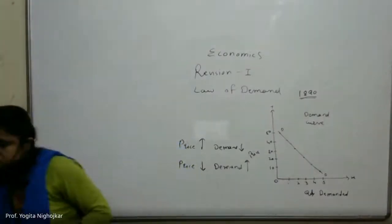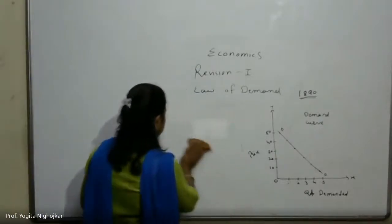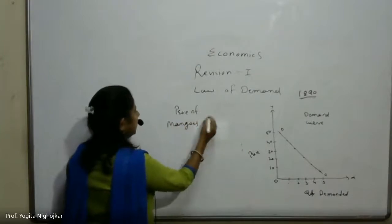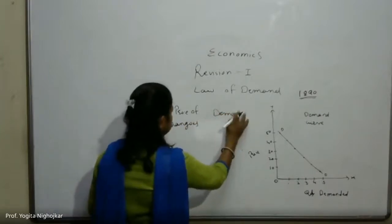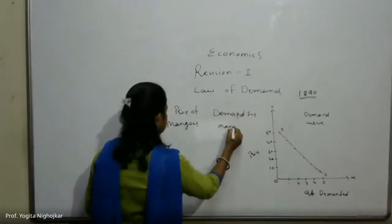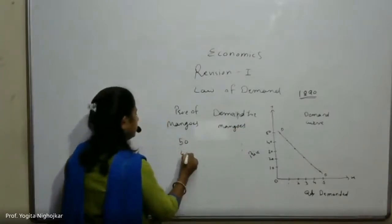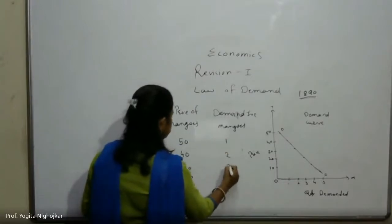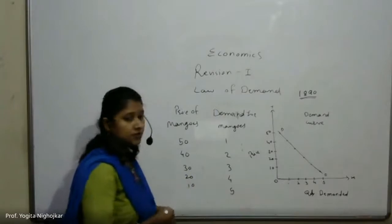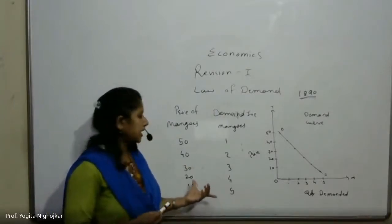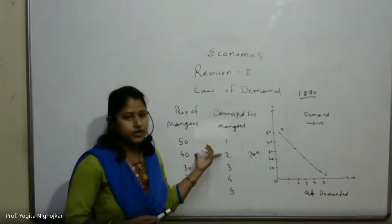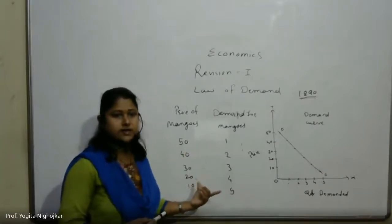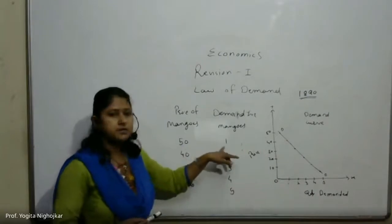I will explain with a schedule. Price of mangoes versus demand for mangoes. When prices are 50, 40, 30, 20, and 10, the corresponding demand is 1, 2, 3, 4, and 5. There is an inverse relationship between price and quantity demanded — larger quantity is demanded when price falls, and smaller quantity is demanded when price rises.